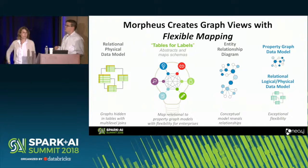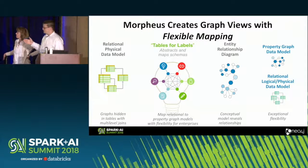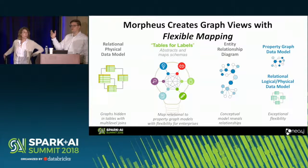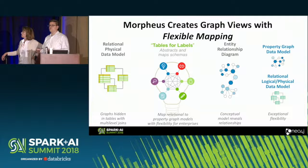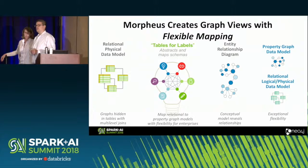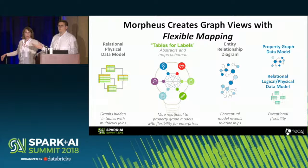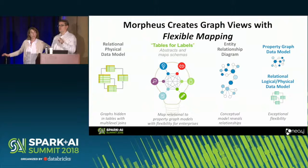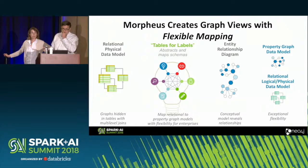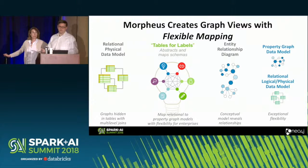The fundamental problem you have to address is the difference between the relational physical model and what graphs are doing. The tables-for-labels concept is really simple: in a Neo4j graph or property graph, you have a label for every different kind of node, like a person. Tables for labels is exactly what it sounds like — for every kind of node in the graph, you're going to have a particular data frame. The only requirements on that data frame are that it must have a unique ID and then any set of properties you care about. With relationships, a minimal relationship table is a unique ID for the relationship and a from ID and a to ID that matches up with what's in your other data frame. You can have any number of other attributes. That's the tables-for-labels concept, and it falls out simply from the Morpheus API when you write the Scala code.